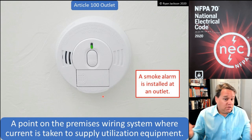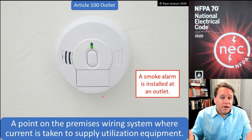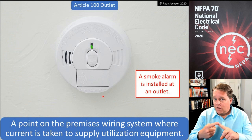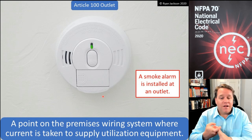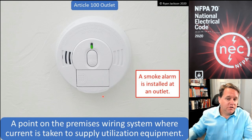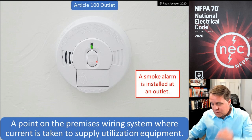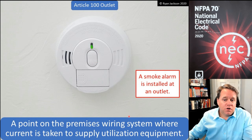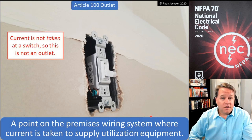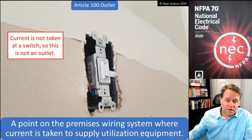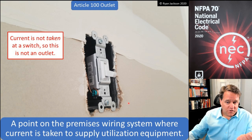A smoke alarm is installed at an outlet. Does it tick the boxes? It's a point on the premises wiring system, current is taken there, and it's supplying utilization equipment. Is a smoke alarm utilization equipment? Yes — it meets the definition of utilization equipment.